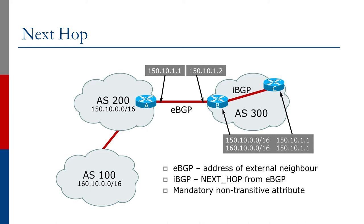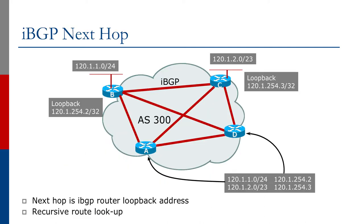iBGP is different. According to the standard, the next hop is learned from eBGP, so nothing changes. When router B sends the prefix onwards to router C, the next hop address is still 150.10.1.1 per specification.